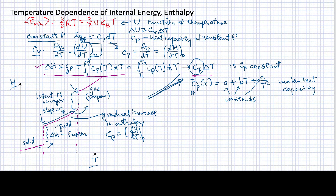So what we find in general is that the heat capacity does increase slightly as the temperature increases, although from the way this is drawn — which is reasonably accurate — it is a fairly good constant. The slope is fairly constant for some range of temperature.